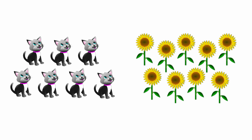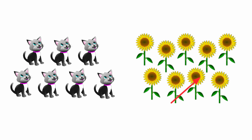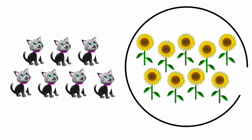Then look at the next one. There are 1, 2, 3, 4, 5, 6, 7, 8, 9. There are 9 sunflowers. So we are going to circle the picture of sunflowers.